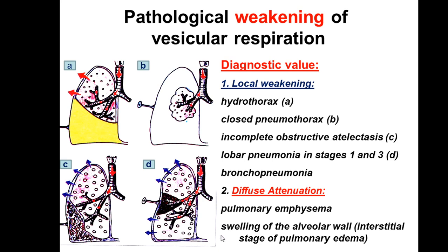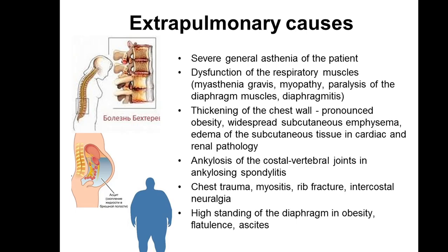Diffuse attenuation may be caused by pulmonary emphysema, swelling of the alveolar wall, interstitial stage of pulmonary edema, and left-sided heart failure. Extrapulmonary causes include severe general asthenia, dysfunction of respiratory muscles such as myasthenia gravis, myopathy, or paralysis of the diaphragm, thickening of the chest wall from pronounced obesity or widespread subcutaneous emphysema, edema of subcutaneous tissue, ankylosis of the costal vertebral joint or ankylosing spondylitis, chest traumas, myositis, rib fractures, intercostal neuralgia, and high standing of the diaphragm in obesity or ascites. All these extrapulmonary causes can limit expansion of the lungs and diminish the sounds.